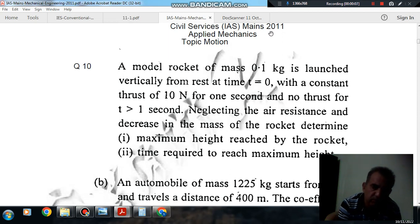Question number 10 from Civil Services Mains 2011: A model rocket of mass 0.1 kg is launched vertically from rest at time t=0, with a constant thrust of 10 N for 1 second and no thrust for t > 1 second. Neglecting the air resistance and decrease in the mass of rocket,